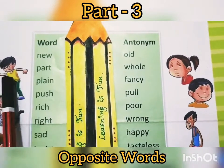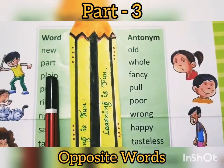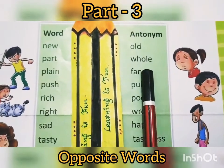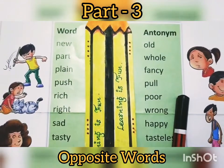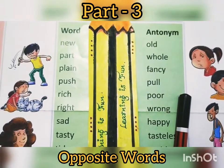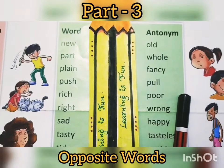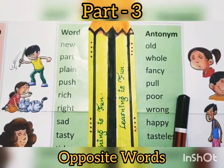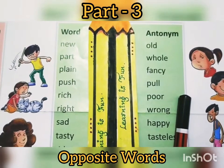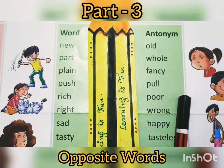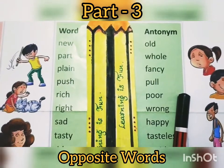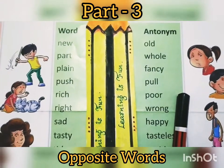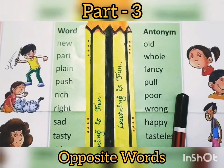Old — its opposite is Whole. To understand this: you have seen that a cake comes at a birthday — it's a whole cake. Then we distribute the pieces. You take one piece — that means you take a part. It's a part.